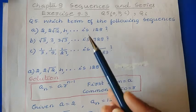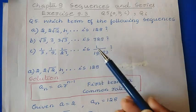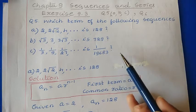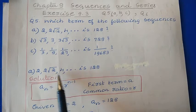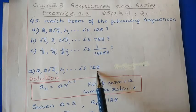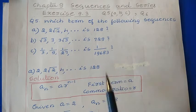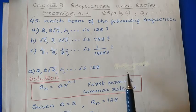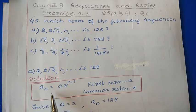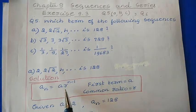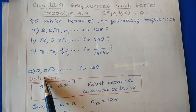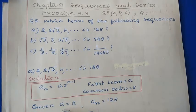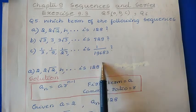We need to find which term that is, the n value we need to find out. The first sequence is 2, 2√2, 4, and the last term is 128. This is a geometric progression. In the case of geometric progression, to find the nth term the formula is aₙ = a·r^(n-1), where a means the first term and r means the common ratio. From this sequence, the first term a = 2 and the last term aₙ = 128.